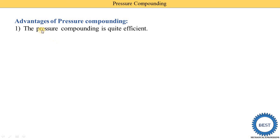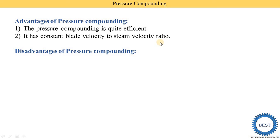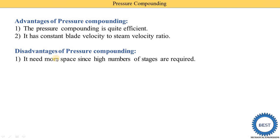What are the advantages of pressure compounding? First, pressure compounding is quite efficient — its efficiency is good. Second, it has a constant blade velocity to steam velocity ratio, meaning the blade velocity divided by steam velocity is constant throughout the various stages. The disadvantage is that it needs more space since a high number of stages are required, meaning more nozzles and more moving blades are needed.